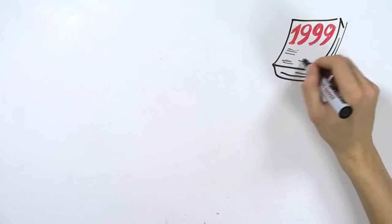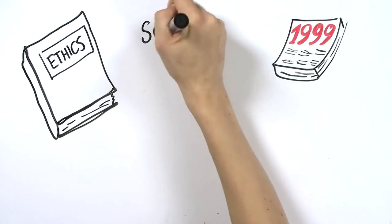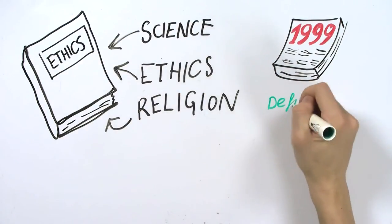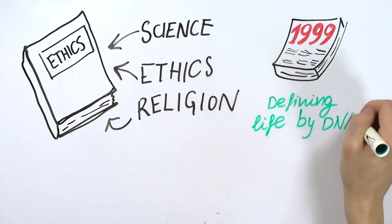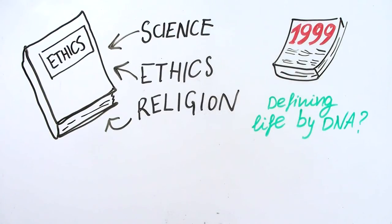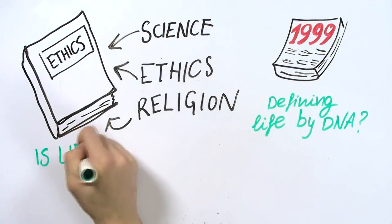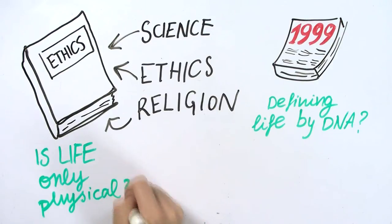In 1999, the first extensive ethical analysis of the field involving science, ethics, and religion was published. The report raised questions such as: What are the ultimate implications of defining life in terms of DNA? Should we allow the definition of life to be treated as a narrow scientific issue, one that assumes that there is nothing in the world that is not physical?